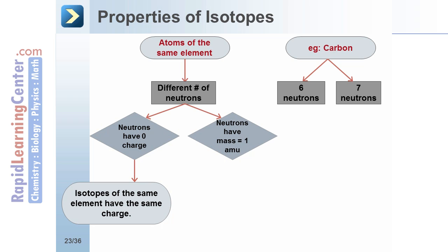However, neutrons do have a mass of 1 amu. Atoms with more neutrons will be heavier.